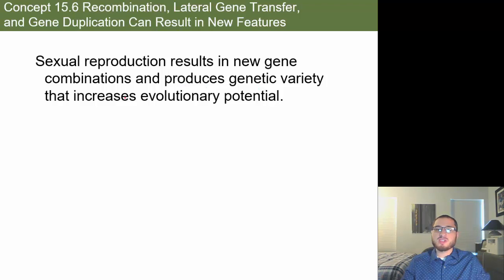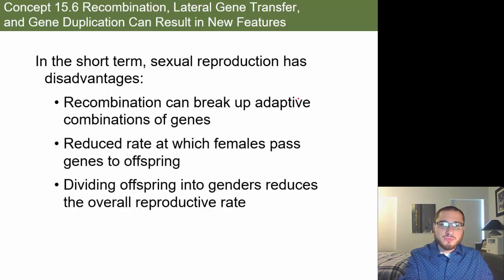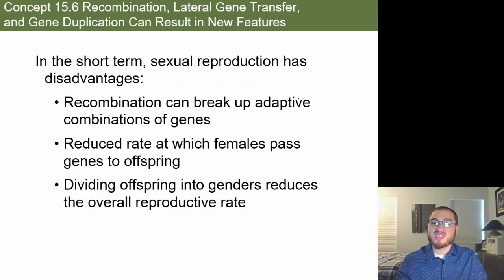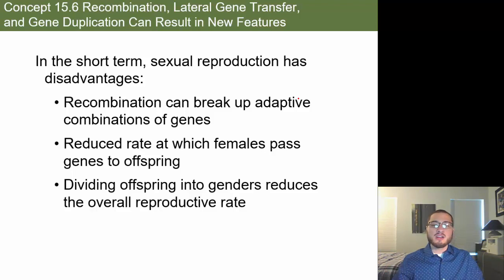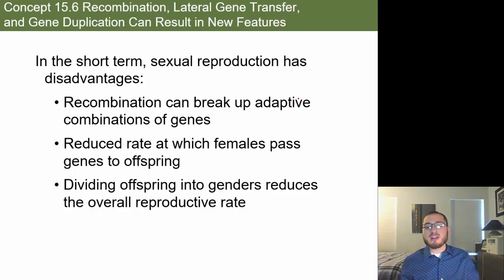You also have insertion mutations, deletion mutations, and rearrangements of DNA sequences, which can have a larger effect than point mutations and can change the reading frame of protein-coding sequences. Sexual reproduction results in new gene combinations and produces genetic variation that increases evolutionary potential. However, sexual reproduction has short-term disadvantages: recombination can break up adaptive combinations of genes, and dividing offspring into genders reduces the overall reproductive rate, since females must find males and vice versa.